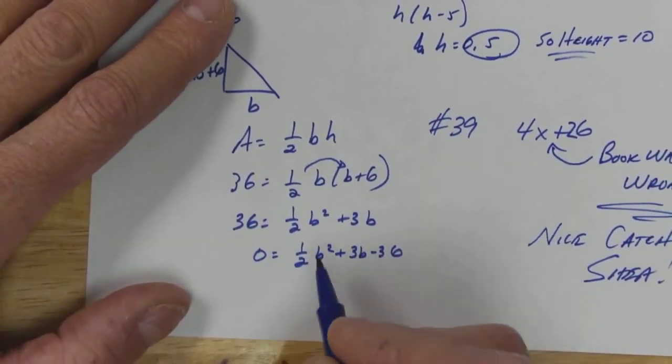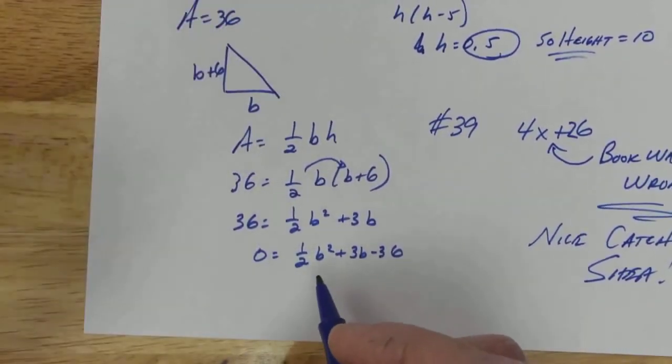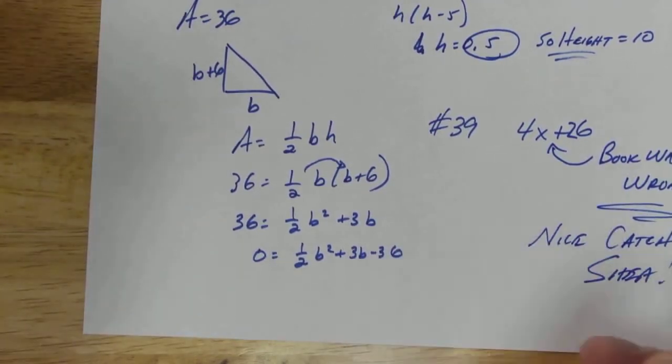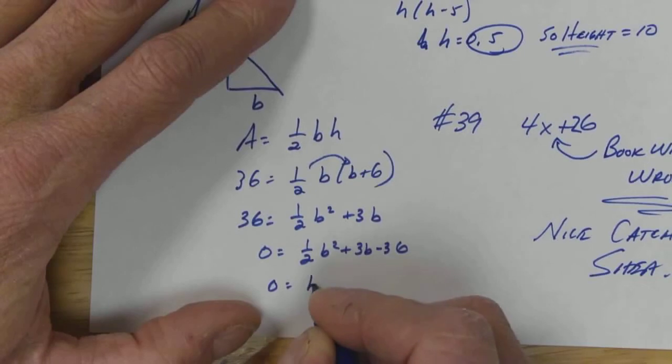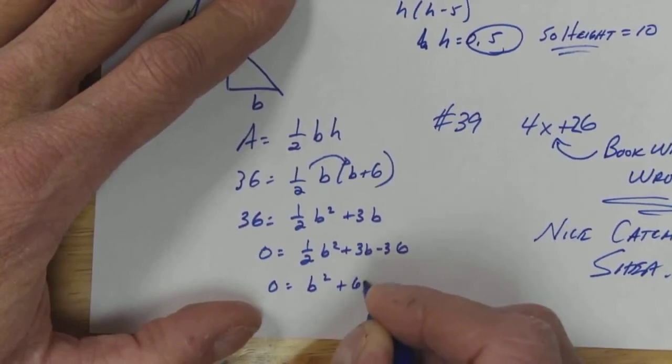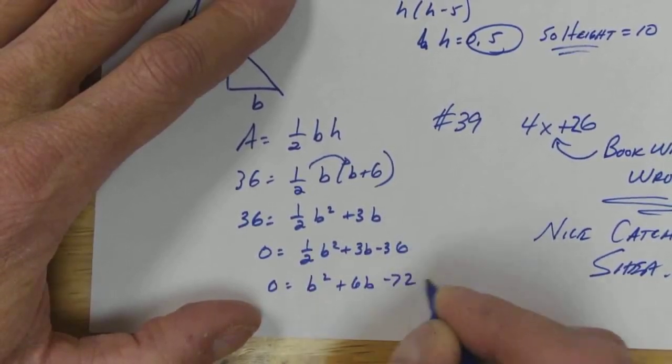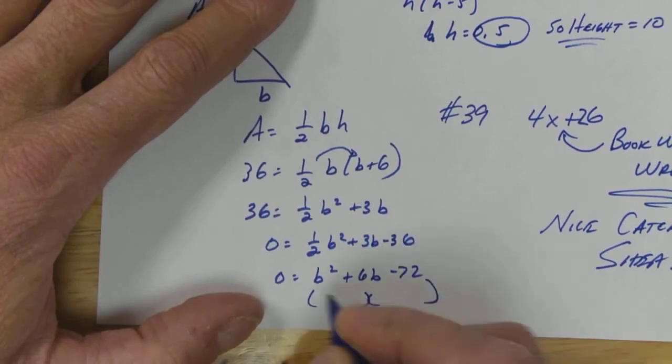And then I got this one half that I don't like. Well, what have we done in the past when we have a one half we don't like? Multiply everything by 2. 0 times 2 is 0. One half times 2 is 1b squared. That times 2 is 6b. This is negative 72.